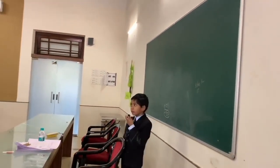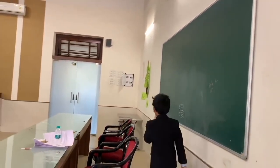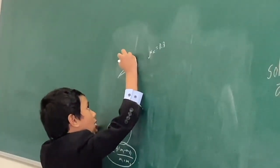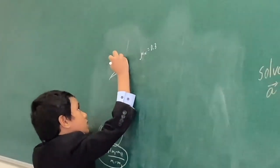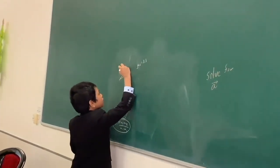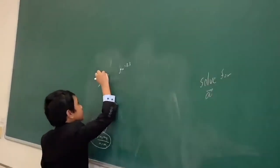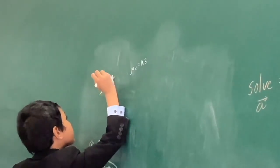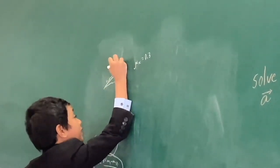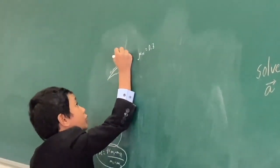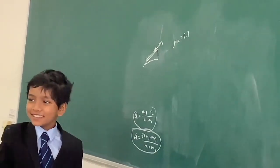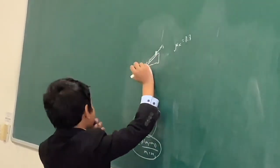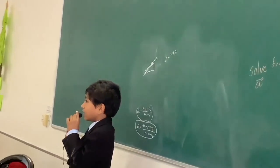The incline has a coefficient of friction of about 0.3. Let's say that it's inclined at an angle of 30 degrees. This has a force in front of it — FG parallel — and then a force behind it, which is FF. So, now, these are the two forces.